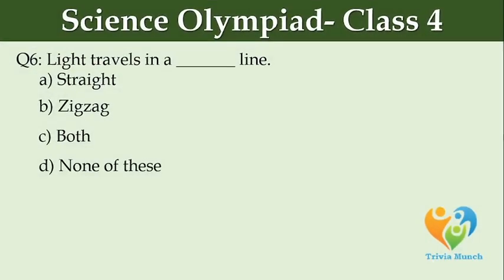Light travels in a dashed line. Option A: straight. Option B: zigzag. Option C: both. Option D: none of these.